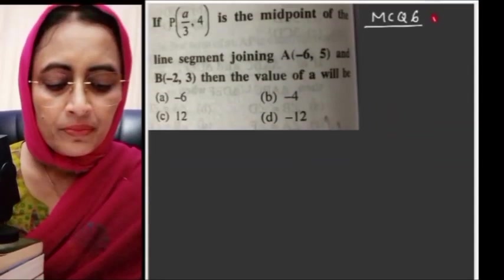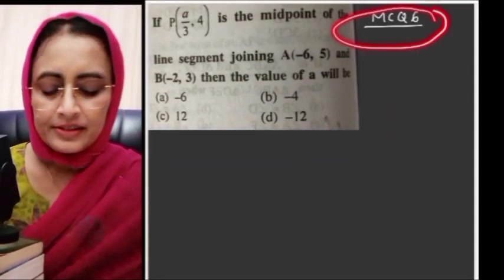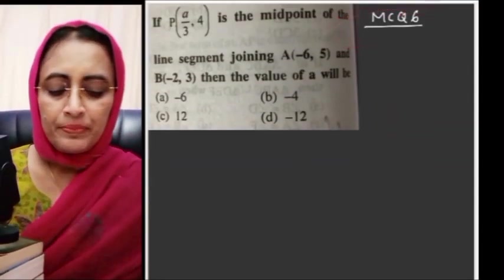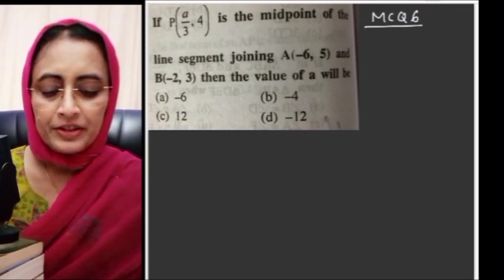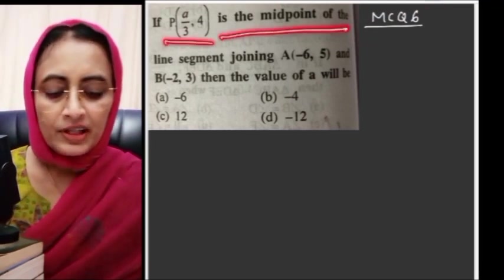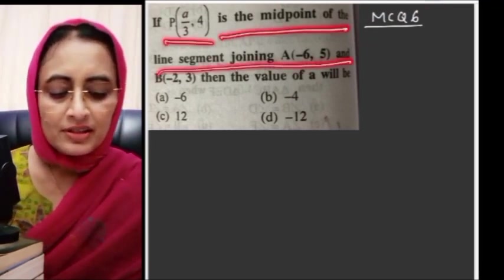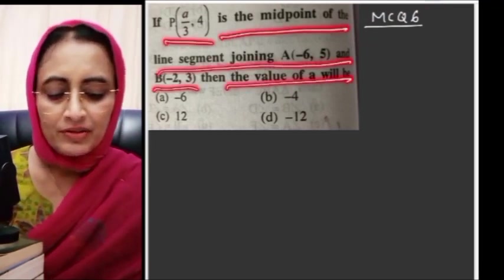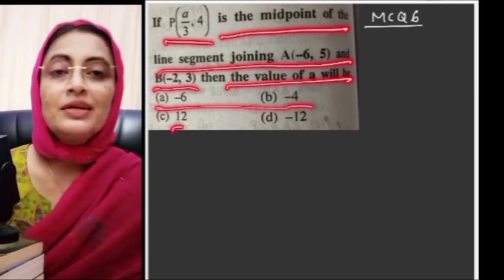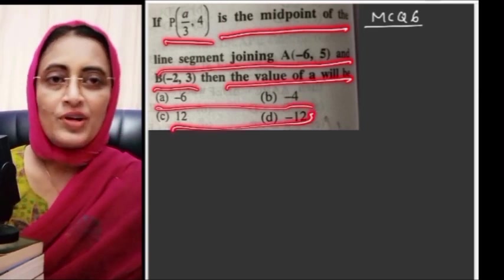MCQ number 6: If P(a by 3) is the midpoint of the line segment joining the two given points, then the value of A. This is a midpoint formula problem — write the midpoint formula and equate it to the given midpoint coordinates to find A.